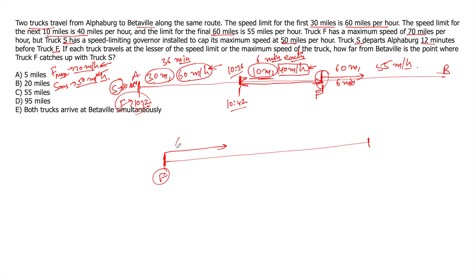S has already traveled for six minutes. Now speed of S, the speed limit here is 55 miles, but S can travel at maximum 50 miles. So this would be speed of S. F can travel at 55 miles per hour. So this would be speed of F. Now S has already traveled for six minutes. So in six minutes at this speed, it will cover five miles. So by the time F enters this zone, this point, S has already traveled five miles.